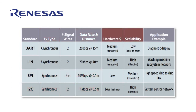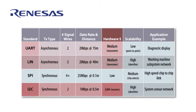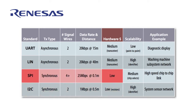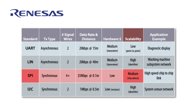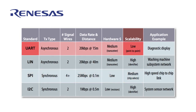Two other factors to consider are hardware cost and scalability. UART and LIN use transceiver chips, which result in higher hardware cost, whereas I2C uses pull-up resistors, which are less expensive. SPI doesn't require any additional external components, making it the least expensive of the four. With built-in device identifiers, it's easy to add devices to a LIN or I2C network. SPI requires a separate chip select signal for each device added, making it more complex to scale, and UART uses point-to-point wiring, making it very inefficient to scale.